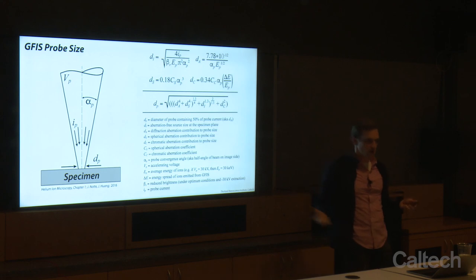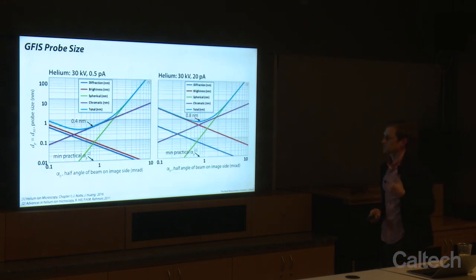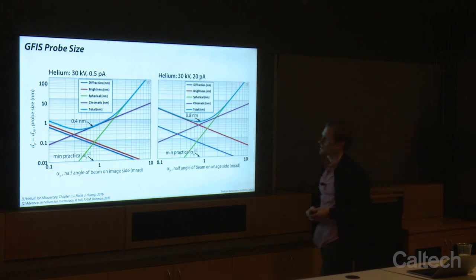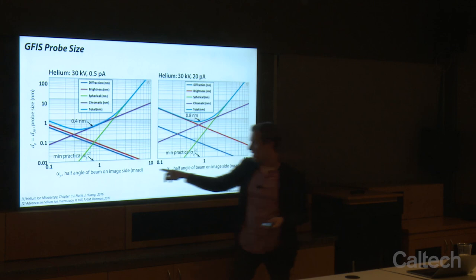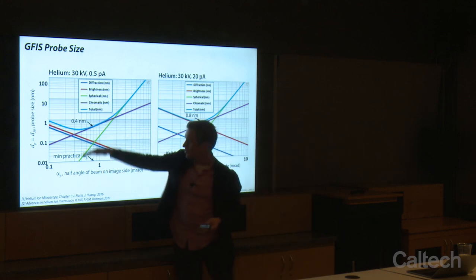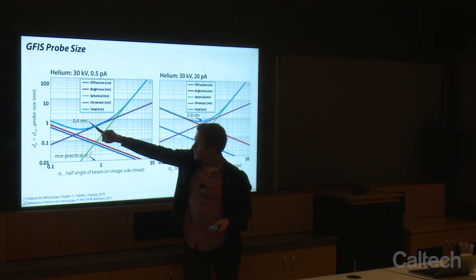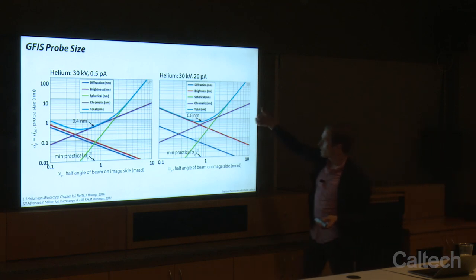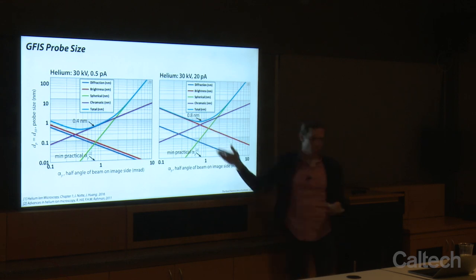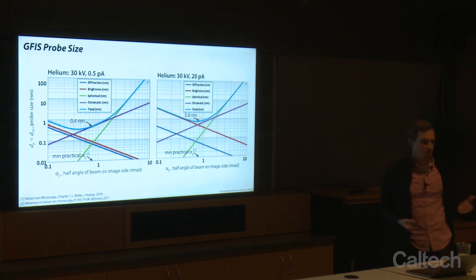Here are some plots from Zeiss when they were constructing these systems. You can see the contributions of diffraction, spherical aberrations, and chromatic aberrations. Depending on the half angle of the beam, we can change the probe size. When we add all these together, we see the total beam diameter. The half angle we usually operate at puts us at around 0.4 nanometers for a 30 kV, 0.5 picoamp helium beam. If we bump up to 20 picoamps, our probe size is about 0.8 — still sub-nanometer, which is far better than an SEM at roughly 2 to 3 nanometers, even in immersion lens mode.